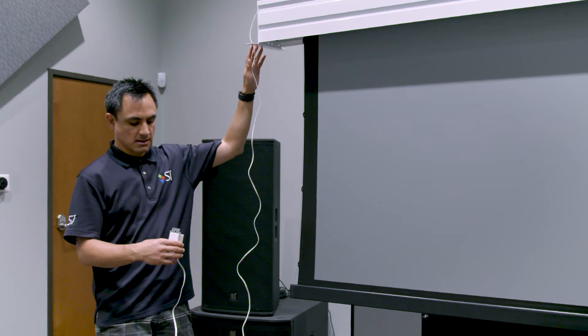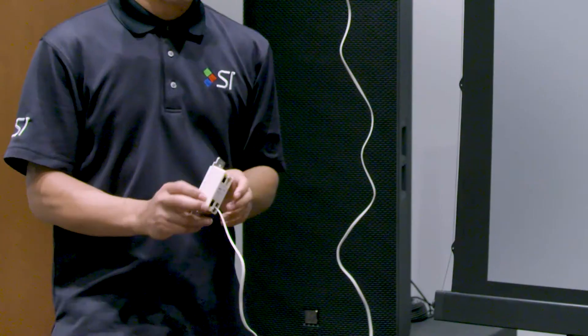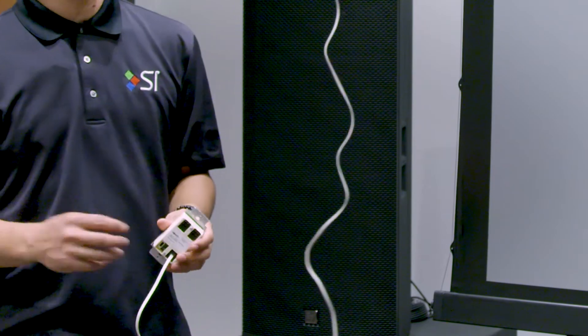So all you have to do is move the dip switch toggle on the back of the wall switch into the down position.